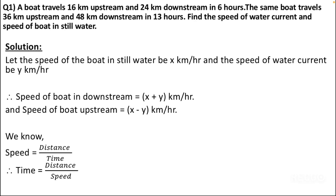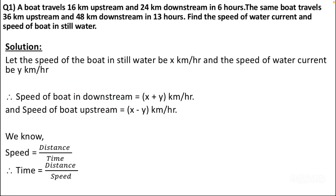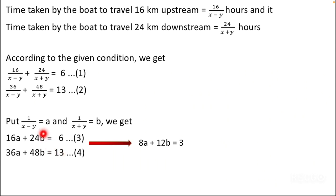From the first condition — 16 kilometers upstream and 24 kilometers downstream in 6 hours — we get: 16/(x minus y) + 24/(x plus y) = 6. From the second condition — 36 kilometers upstream and 48 kilometers downstream in 13 hours — we get: 36/(x minus y) + 48/(x plus y) = 13. These two equations are not linear equations as they stand.